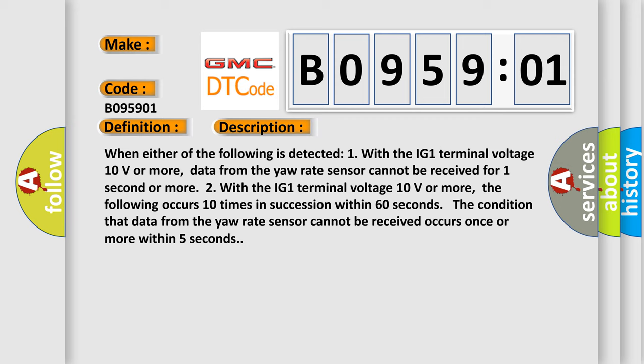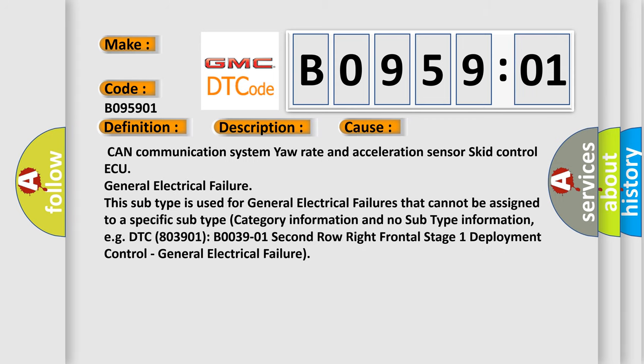This diagnostic error occurs most often in these cases: CAN communication system yaw rate and acceleration sensor skid control ECU, general electrical failure. This subtype is used for general electrical failures that cannot be assigned to a specific subtype category information and no subtype information.